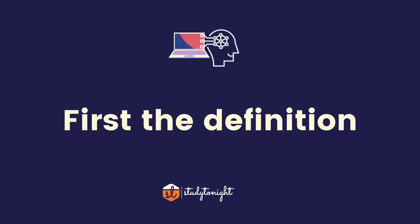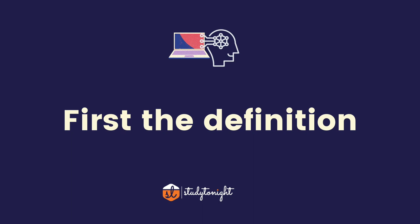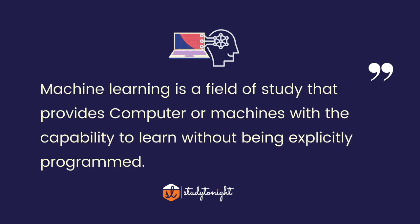Let's start with a basic introduction to machine learning. There are multiple definitions for machine learning and I will cover a few of them in this video, explaining them in simple language with examples so that you gain multiple perspectives and better understand machine learning and why it is required. The first definition says: machine learning is a field of study that provides computers or machines the capability to learn without being explicitly programmed.